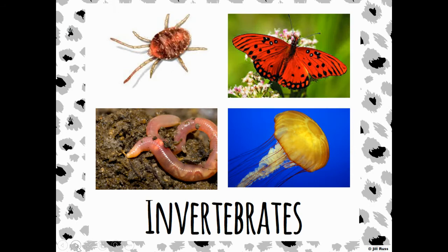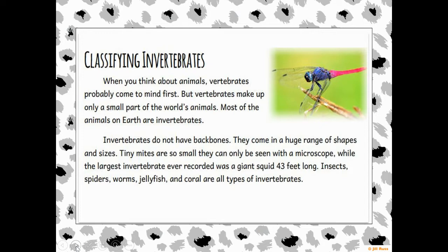Here are some examples of invertebrate animals — animals that do not have a backbone: insects, butterflies, worms, and jellyfish. Today we're going to talk about how they stay alive and not be big blobs on the ground if they don't have a backbone.